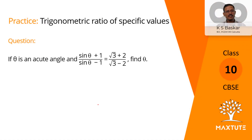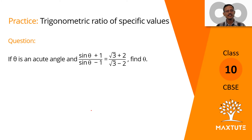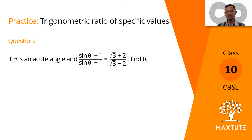This is a practice question in trigonometric values of basic angles. It can be solved in two ways — let's look at both approaches. If theta is an acute angle and (sin θ + 1)/(sin θ − 1) = (√3 + 2)/(√3 − 2), find the value of theta.